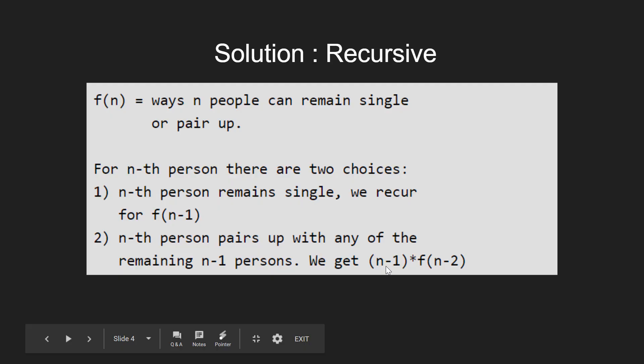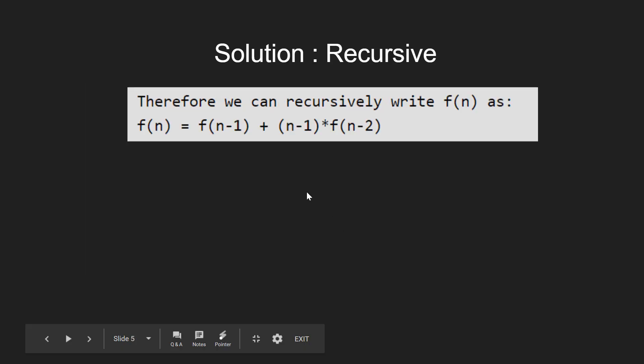Hence, overall, we can write the function recursively as f(n) = f(n-1) + (n-1) * f(n-2).